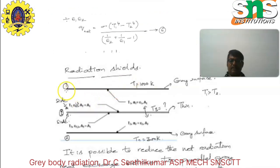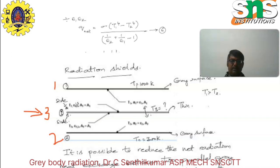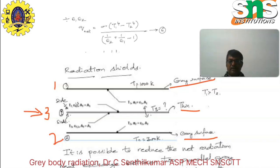Here you can see 3 surfaces: surface 1, surface 2, and surface 3. Surface 3 is inserted between surface 1 and surface 2 as a thin layer. Surface 1 is a grey surface, and surface 2 is also a grey surface. The third one is a reflective body. We do not know the T3 value — that is what we are going to see in this session: how to understand the radiation shield.